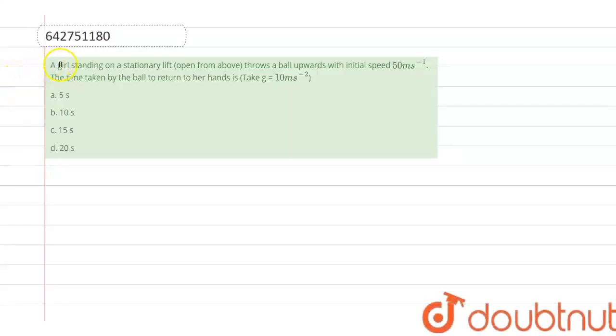In this question, it says that a girl is standing on a stationary lift and throws a ball upward with an initial speed of 50 meters per second. In the question it is being asked what is the time after which the ball returns to the girl again.